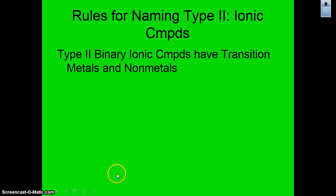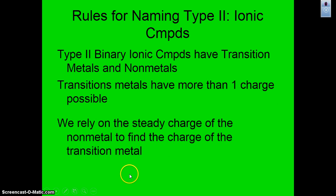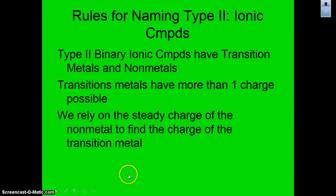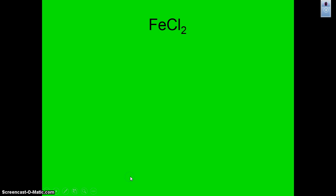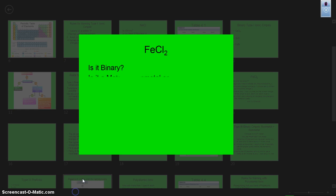Here's the rules. Type 2 binary compounds have a transition metal and a non-metal. Transition metals have more than one charge possible, so we have to rely on the charge of the non-metal to find the charge on the transition metal. Let me go to another slide.